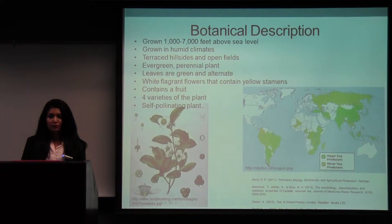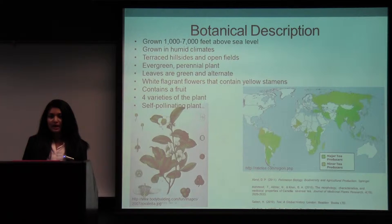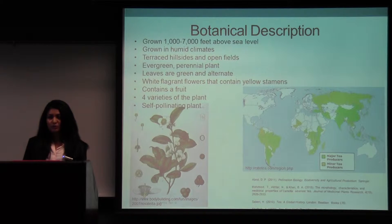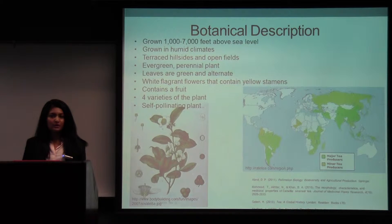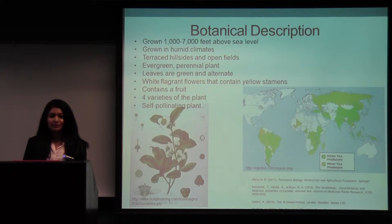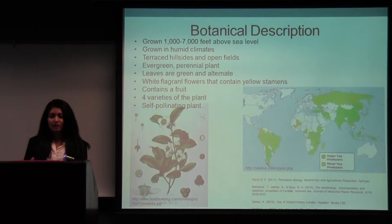It does grow with fruit, and the fruit contains anywhere from 2 to 4 seeds. It is a self-pollinating plant, and there are four main varieties. There's the Chinese one, commonly known as the Bornea, and the Indian one, known as the Somme, and then there's a relative of both. The main difference between all of them is in the leaves — the Somme has a bigger leaf, whereas the Chinese one has a smaller one.